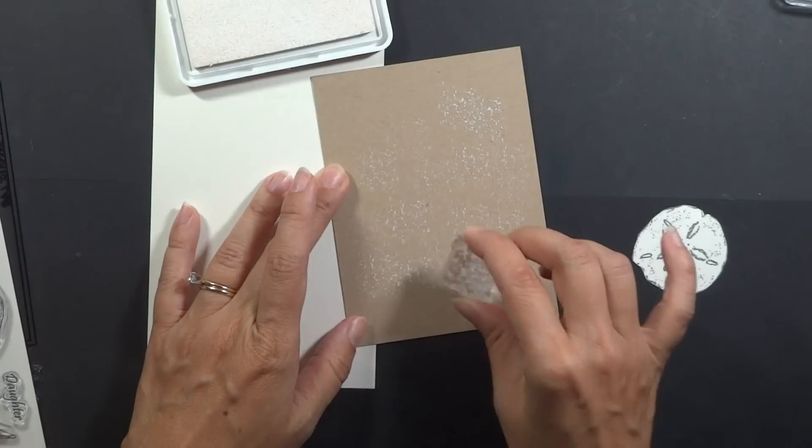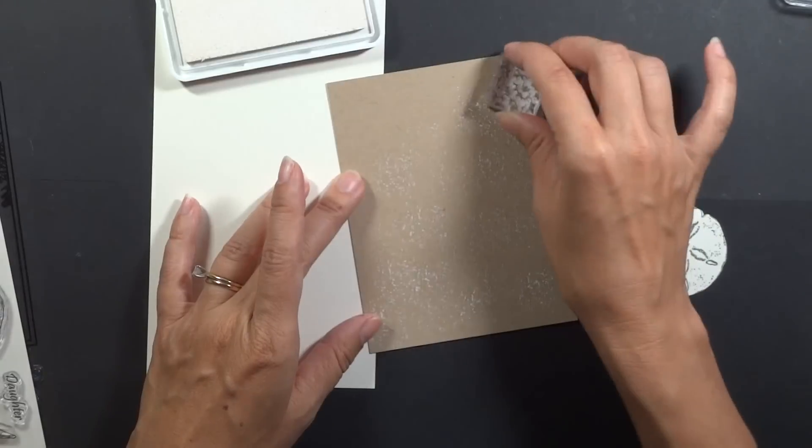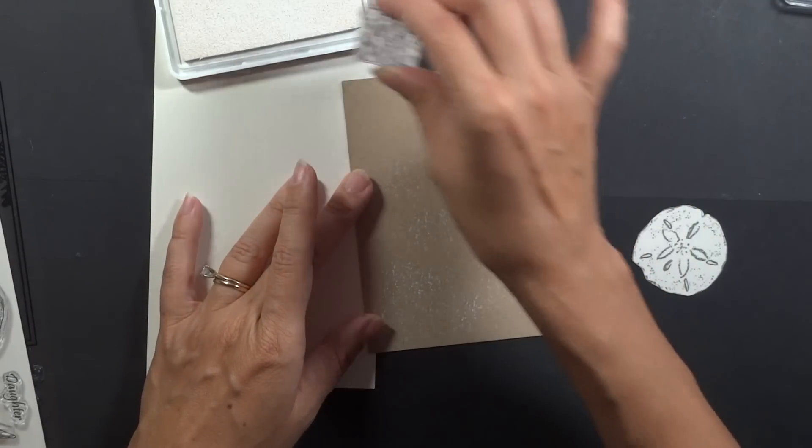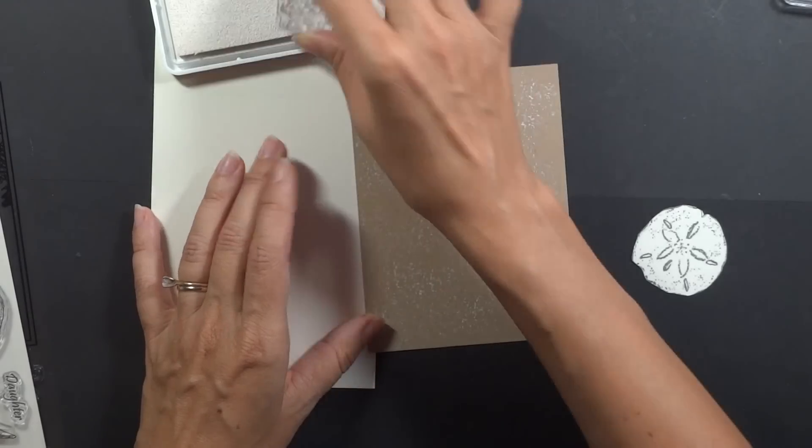But right here what I'm doing is I'm trying to recreate the look of snow but it is making it look even a little more sandy just with these speckles. And then I'm going to put just a little bit more down at the bottom as if it's all piling up there.